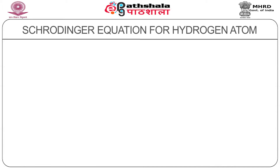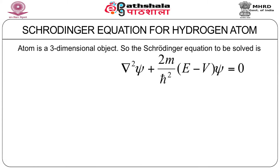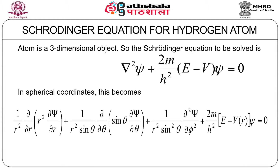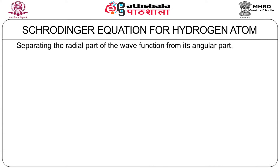Now let's write down the Schrödinger equation for the hydrogen atom. That's the usual Schrödinger equation: del² ψ + (2m/ℏ²)(U − V)ψ = 0, where del² has to be written in spherical coordinates. If you express del² in spherical coordinates, you get the second equation which you can see on the screen. You can separate the radial part of the wave function from its angular part.